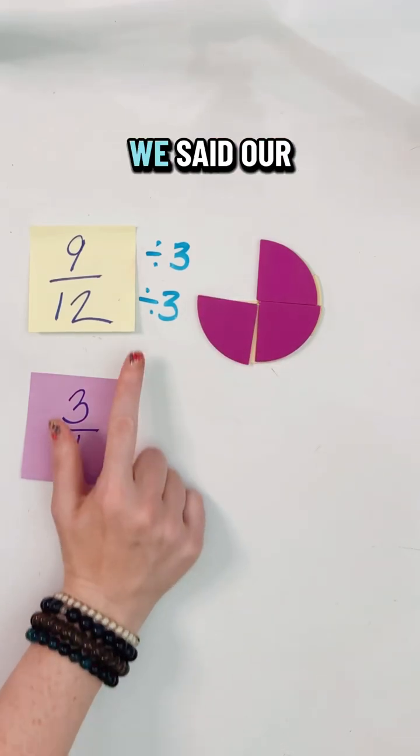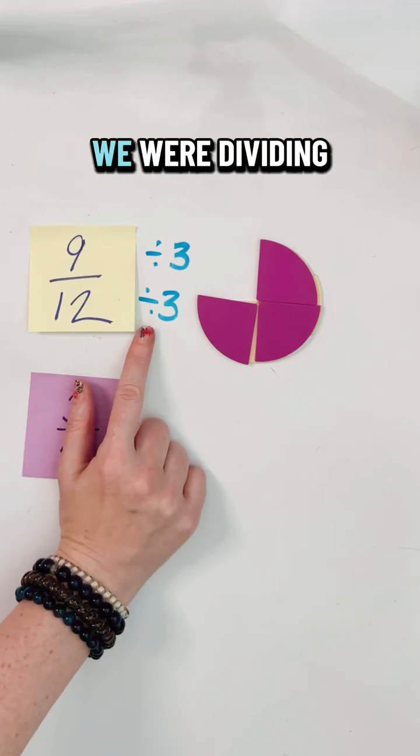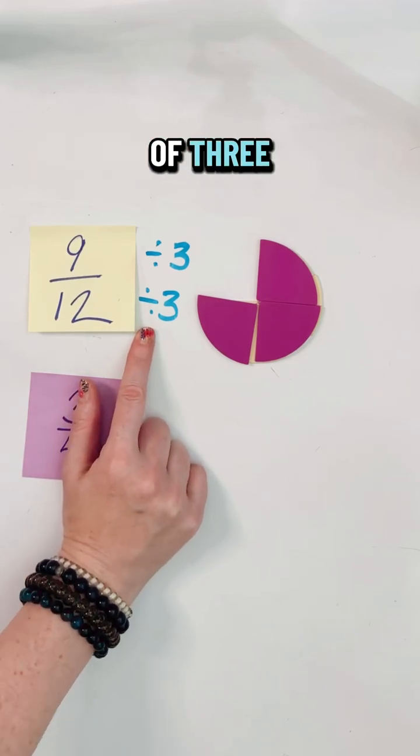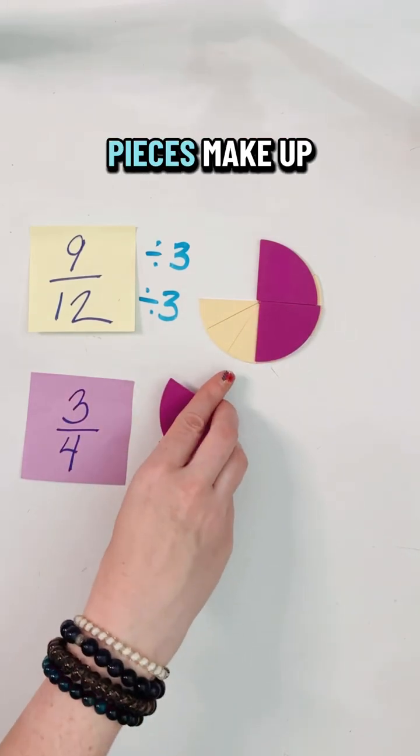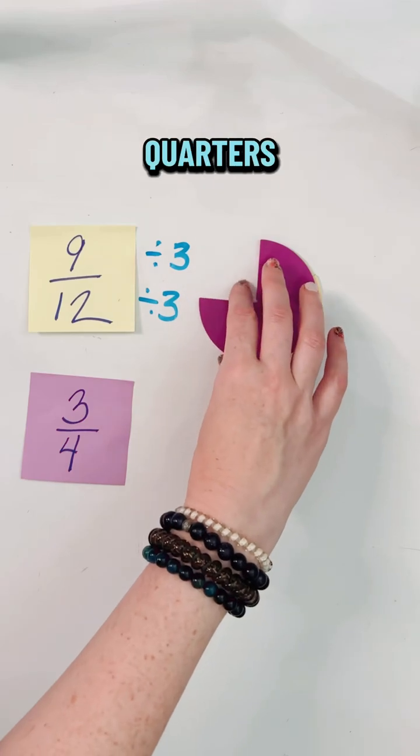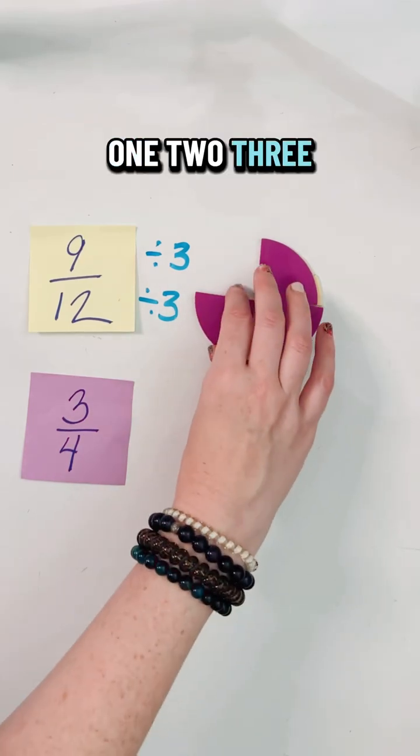And remember how we said our greatest common factor was three? We were dividing them into groups of three. Look how many pieces make up one of my quarters: one, two, three.